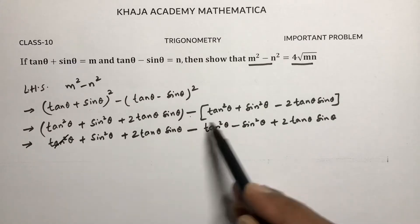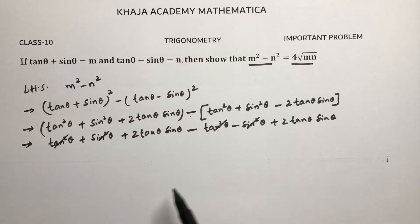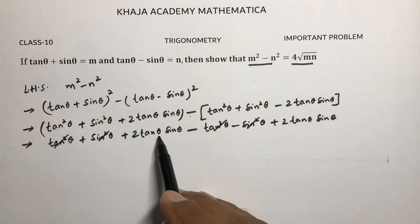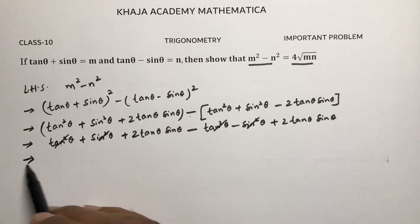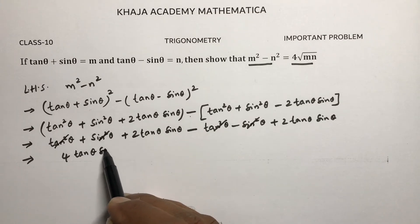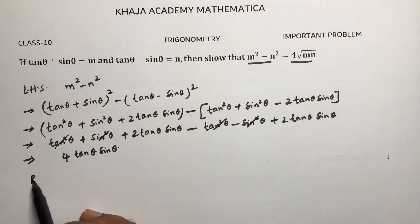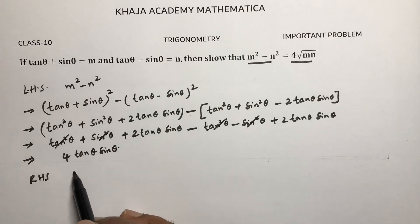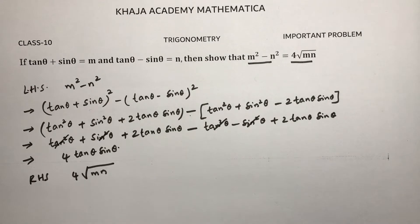Simplifying: tan squared and tan squared will get cancelled, sin squared and sin squared will get cancelled. So LHS simplifies to 4 tan θ sin θ. Now simplify RHS, which is 4 root mn.